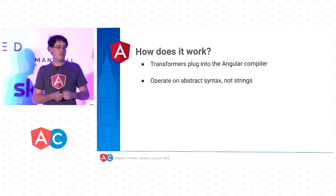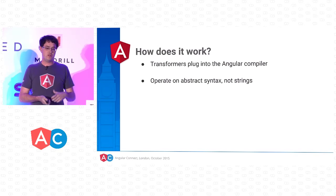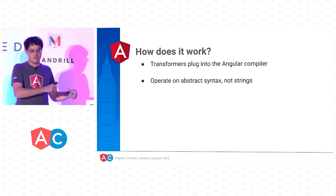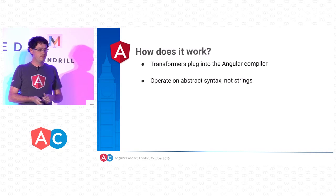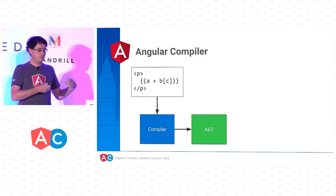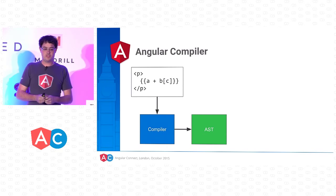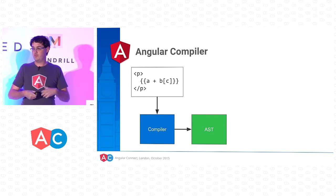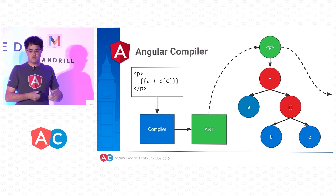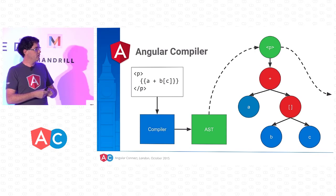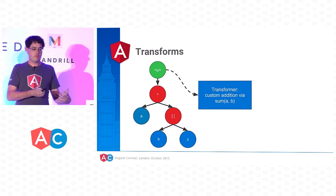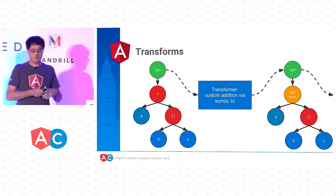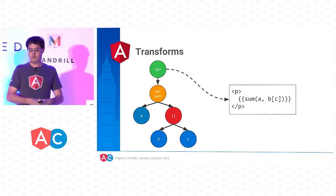How does this actually work in Angular? Transformers are plug-ins to the Angular compiler. They don't run against the raw text of the templates — instead, when Angular loads your templates, it parses them into an abstract syntax tree (AST), and the transformer runs against that. For example, suppose we have a template with a paragraph tag displaying the result of an addition operation, and we want to transform it to use a custom summation function called sum. The Angular compiler parses it to an AST with our paragraph tag containing an addition operation between two sub-expressions. We feed this tree into our transformer, which returns a new tree with a sum operation with those sub-expressions as arguments.